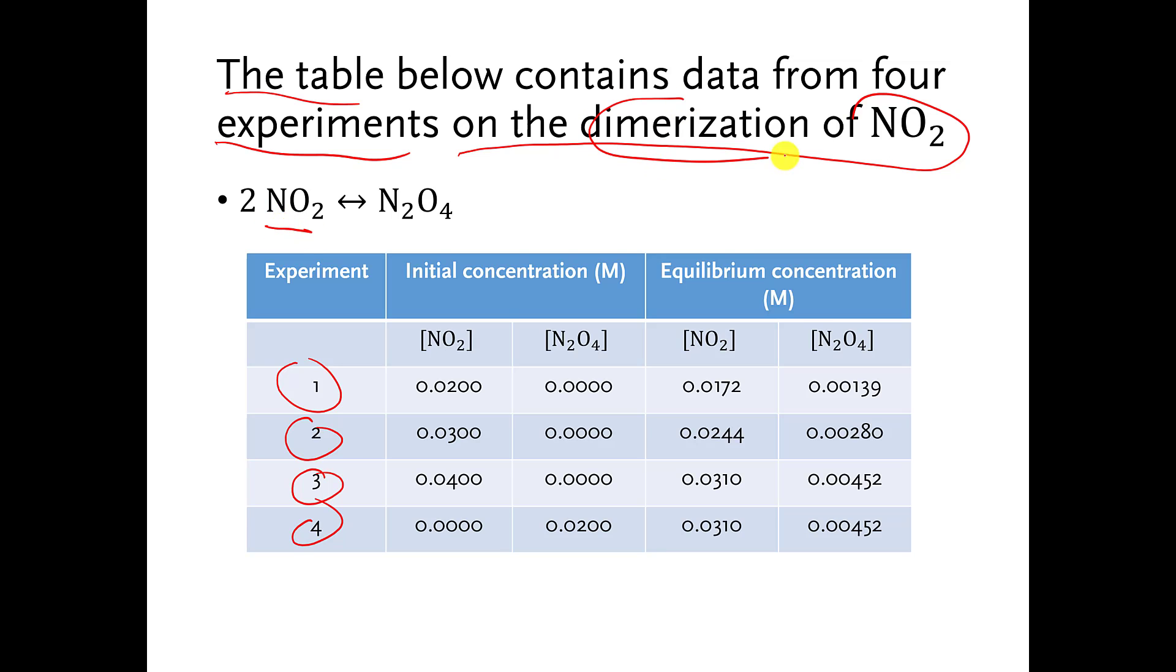So here's NO2. Dimerization is just a fancy word for two things kind of sticking together and forming one thing. So we have two NO2 molecules, and when they dimerize, they make a single N2O4 molecule.